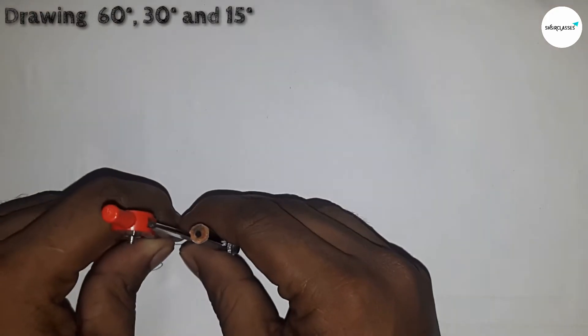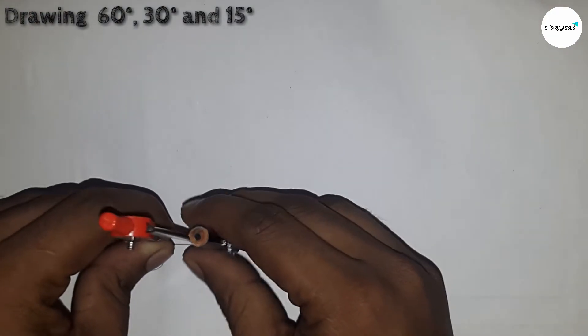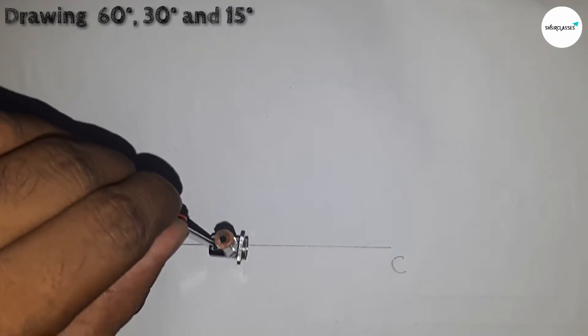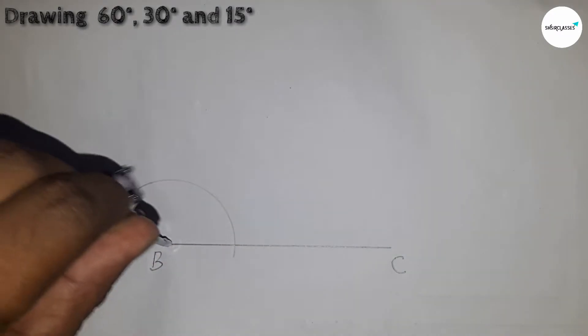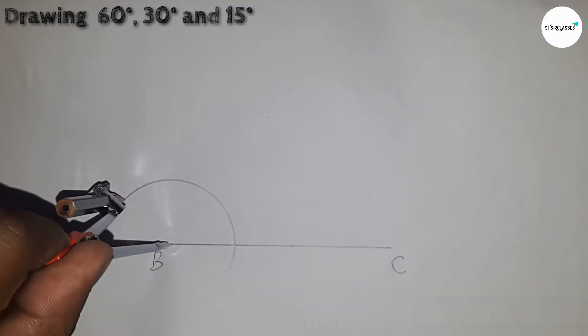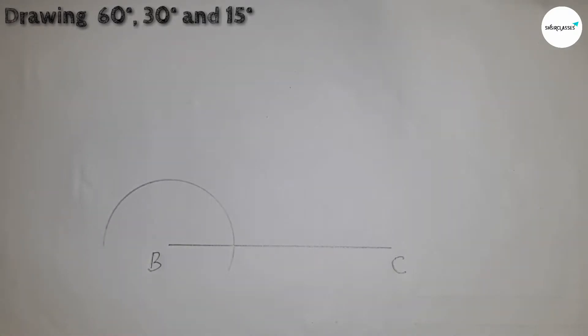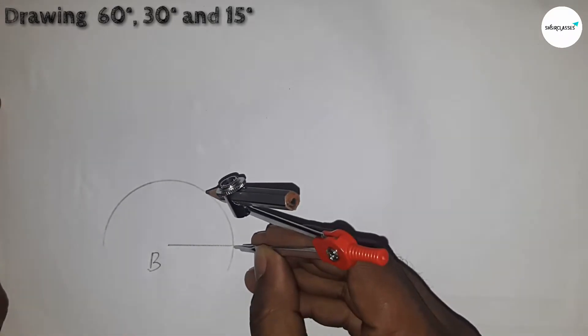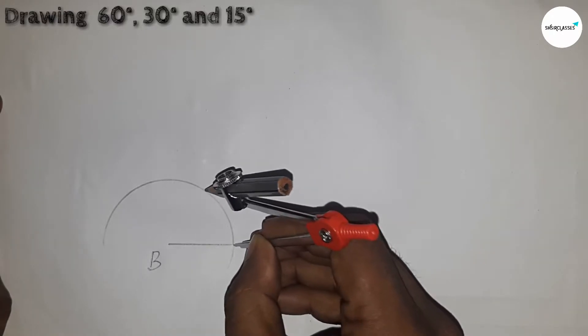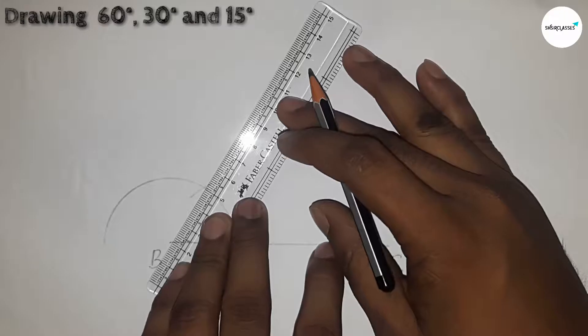Now putting pencil compass on this point and taking any radius and draw an arc by this way. With same radius and putting here the compass and cut the arc.